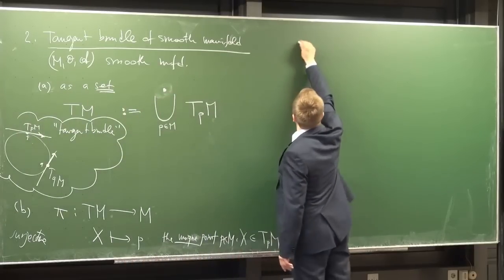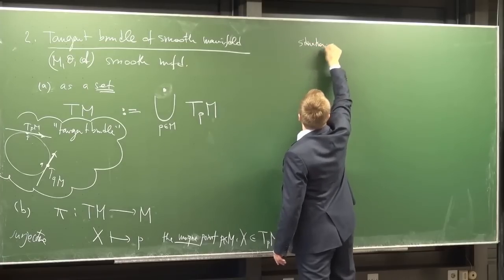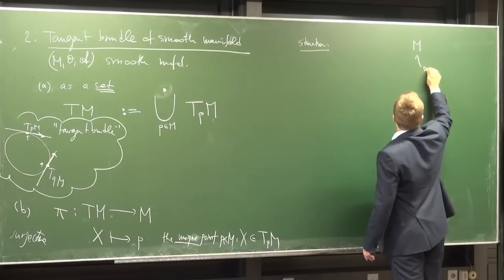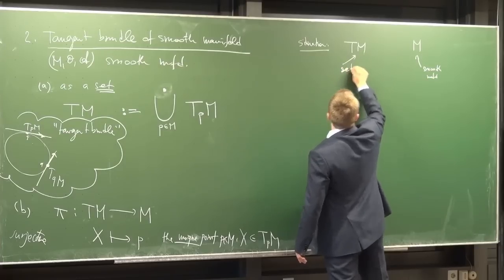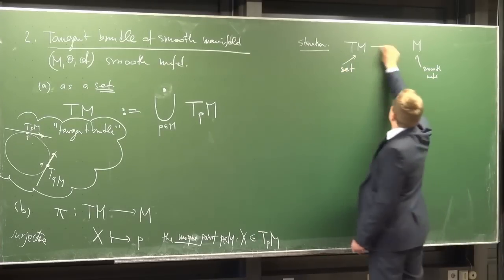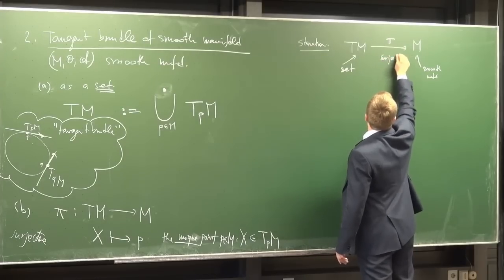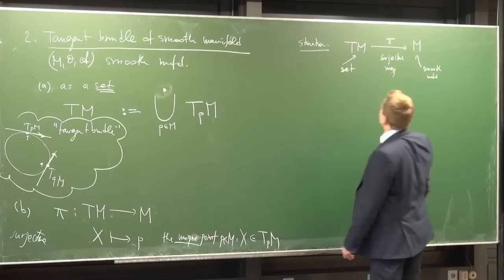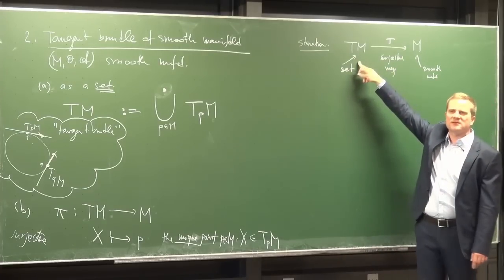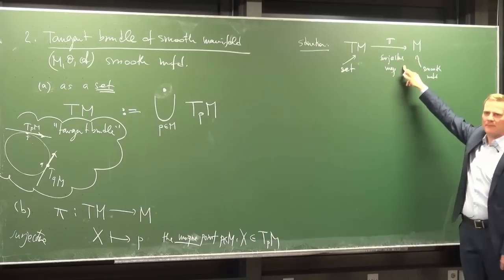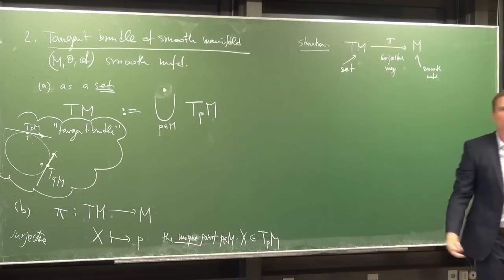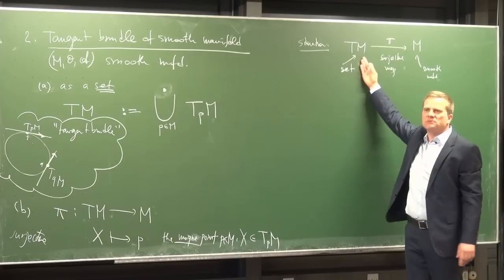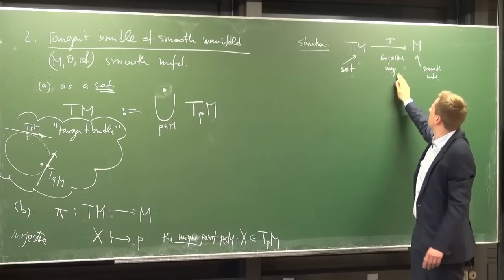So at this stage we have a smooth manifold M, a mere set TM (far from a smooth manifold), and a surjective map. We can't yet say whether it's smooth because TM has no smooth structure. The next step is to make TM into a smooth manifold. A smooth manifold is first a topological manifold, so we need to equip TM with a topology.